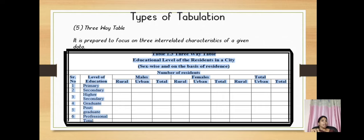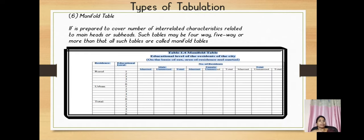Under types of tabulation, three way table. It is prepared to focus on three interrelated characteristics of a given data. You can see the three interrelated: level of education, male, female and total. Manifold table is prepared to cover number of interrelated characteristics related to main heads or sub heads. Such tables may be four way, five way or more than that. All such tables are called manifold tables.